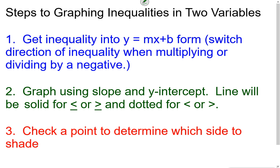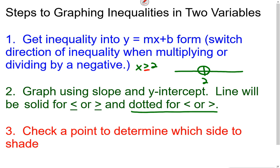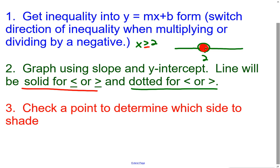The reason for solid vs. dashed goes back to number line graphing. For x > 2, we use an open dot — similar to a dashed line. If we include equals, we shade it in — similar to a solid line. Step three: check a test point to determine which side of the line to shade, since that's where all the solutions lie.